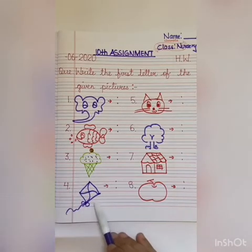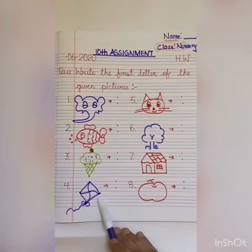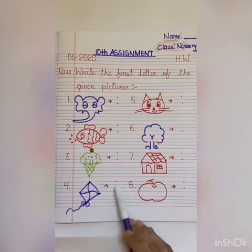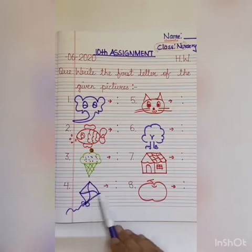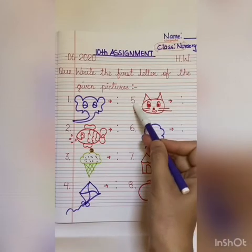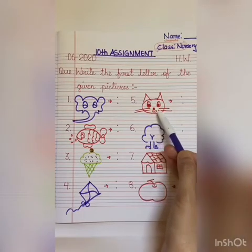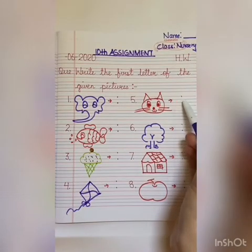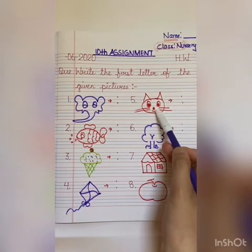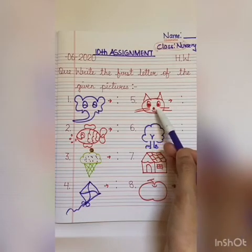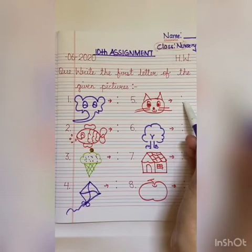Number four — what is this? Yes, K, kite. And the first letter of kite is K. So you will write K. K, kite. Now number five — which animal is this? Yes, this is a cat. You will write C. The first letter of cat is C. C, cat.